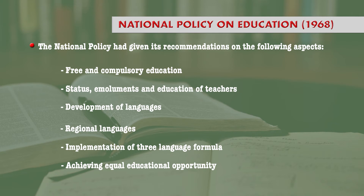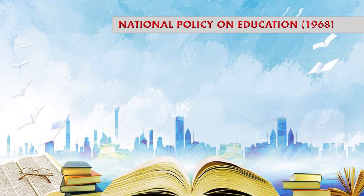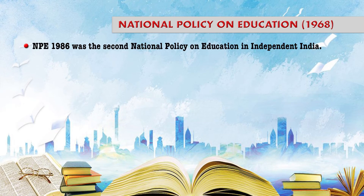Achieving equal educational opportunity as per the constitutional provisions — these are certain important areas on which the National Policy on Education 1968 gave its suggestions and recommendations. Then further, let us focus upon another National Policy on Education established in 1986. National Policy on Education 1986 was the second national policy on education in independent India — the first being 1968 and the second 1986.